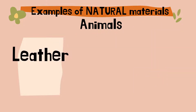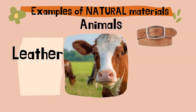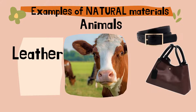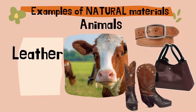Another natural material that comes from animals is leather. Leather is the skin of animals. Leather comes from animals like the cow, the crocodile, the snake, and many other animals. People use leather to make things like leather belts, leather handbags, leather shoes, and many other things.